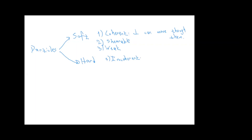For incoherent particles, the dislocation cannot move through them. They are not shearable, and they are hard — not weak. So from solid solution strengthening to precipitation strengthening, we are changing the type of particle from soft to hard, changing the strengthening methodology from coherent to incoherent.